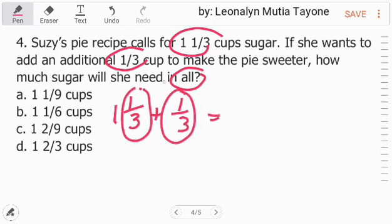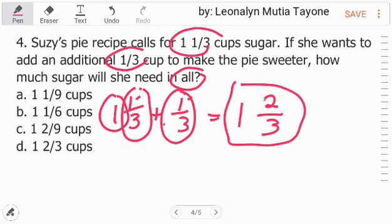So, bali 1 and 1 third plus 1 third equals. Since pareho naman itong denominator sa mga fractions natin, so, kopyahin lang si denominator na 3. 1 plus 1 and that is 2. So, itong whole number na ito ay kopyahin lang dyan kasi wala naman siyang whole number sa kabila. So, the answer here is 1 and 2 thirds. Letter D.